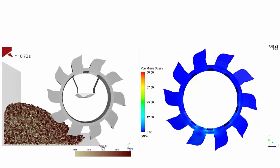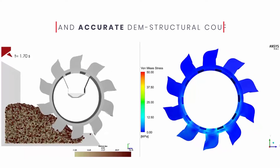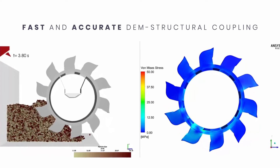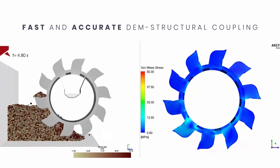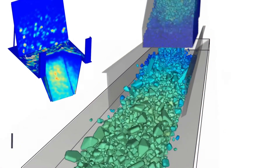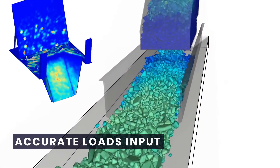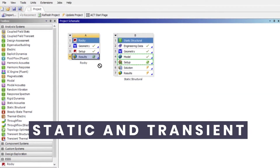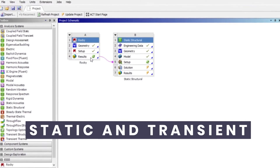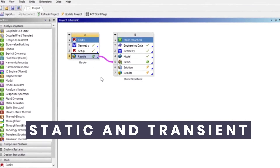Welcome to fast and accurate particles and structural coupled analysis with Rocky and ANSYS Mechanical. Determine pressure loads due to solids, with automatic load transfers directly in ANSYS Workbench.